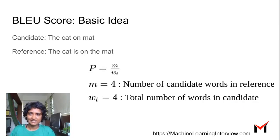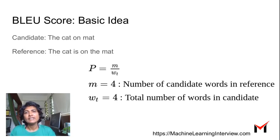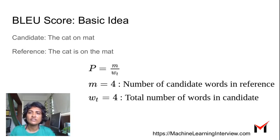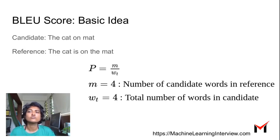The basic idea is this: suppose you have a candidate 'the cat on mat' which your model generated, and a reference sentence 'the cat is on the mat' which is what should have been generated. The basic idea is to take the ratio of the number of candidate words that are in the reference to the total number of words in the candidate — the fraction of candidate words that are actually in the reference. You will get a BLEU score of one here because every word in the candidate is also in the reference, though there are some extra words in the reference not in the candidate.